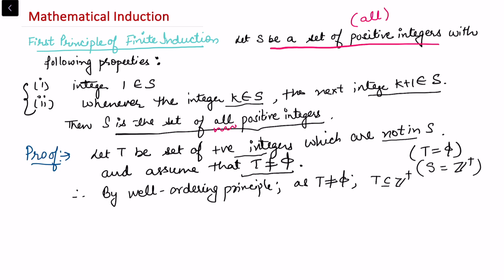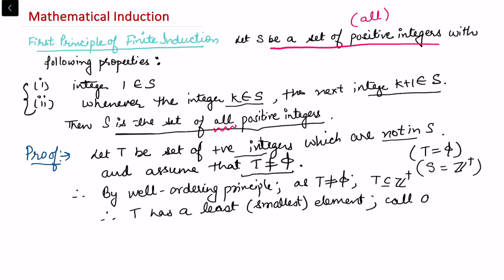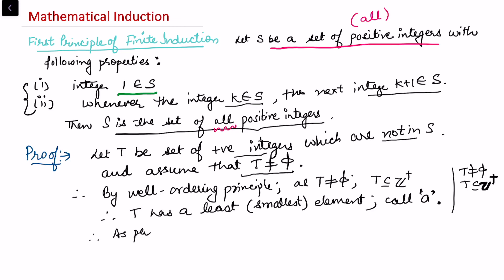By the Well-Ordering Principle, since T is non-empty and T is a subset of the positive integers, T has a least element. Call it a. Since 1 belongs to S and T consists only of integers not in S, the least possibility in the positive integers is 1, but 1 belongs to S, so a must be strictly greater than 1.